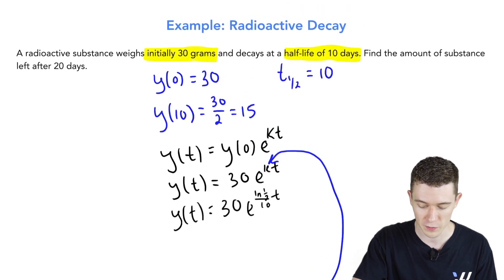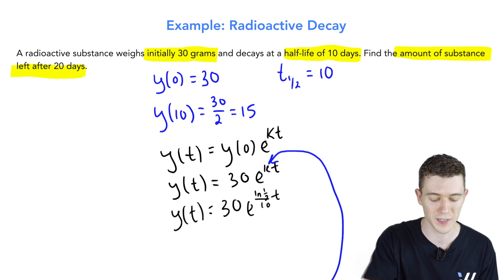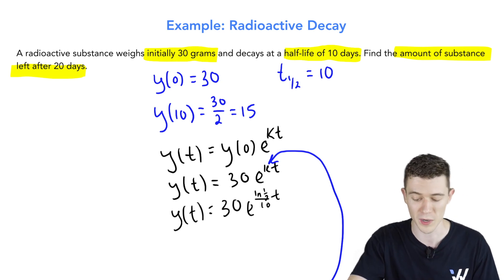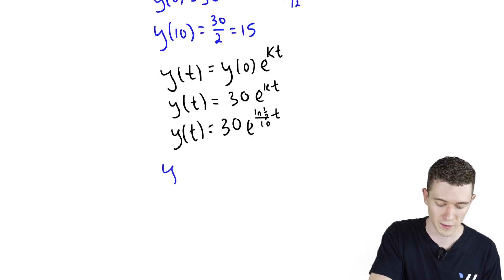What was our question? Find the amount of substance after 20 days. When t equals 20, let's substitute 20 into our new equation. y(20) equals 30e^(natural log of 1/2 over 10 times 20).